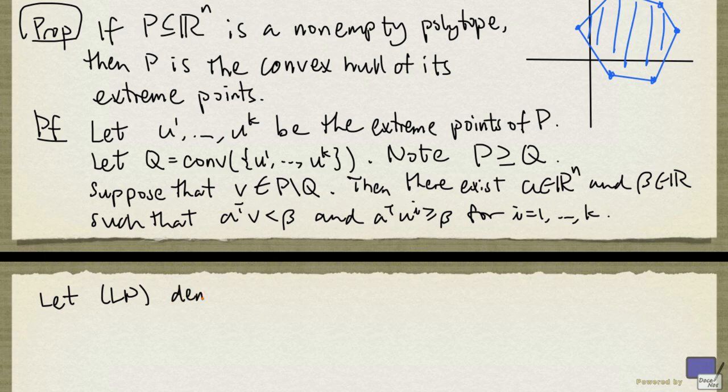Now, let LP denote the linear programming problem, minimize a transpose x, subject to x in P. Because P is non-empty, it has a feasible solution. Also P is a bounded set, so this linear programming problem cannot be unbounded. And so LP has an optimal solution.